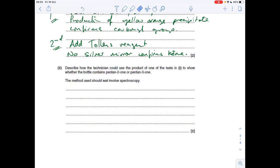Part two: how could the technician use the product of one of the tests above to show whether it's pentin-2-one or 3-one? They're going to take the melting point of the purified - remember, you've got to recrystallise it first to get rid of the impurities - purified 2,4-DNP derivative and compare that to data values, known data values.